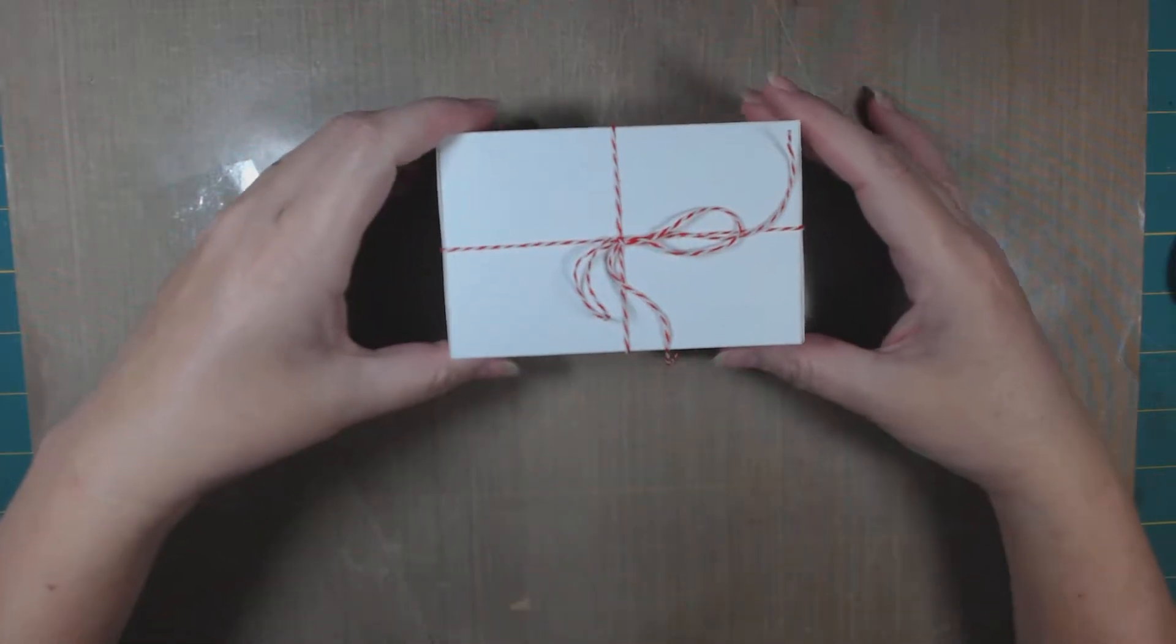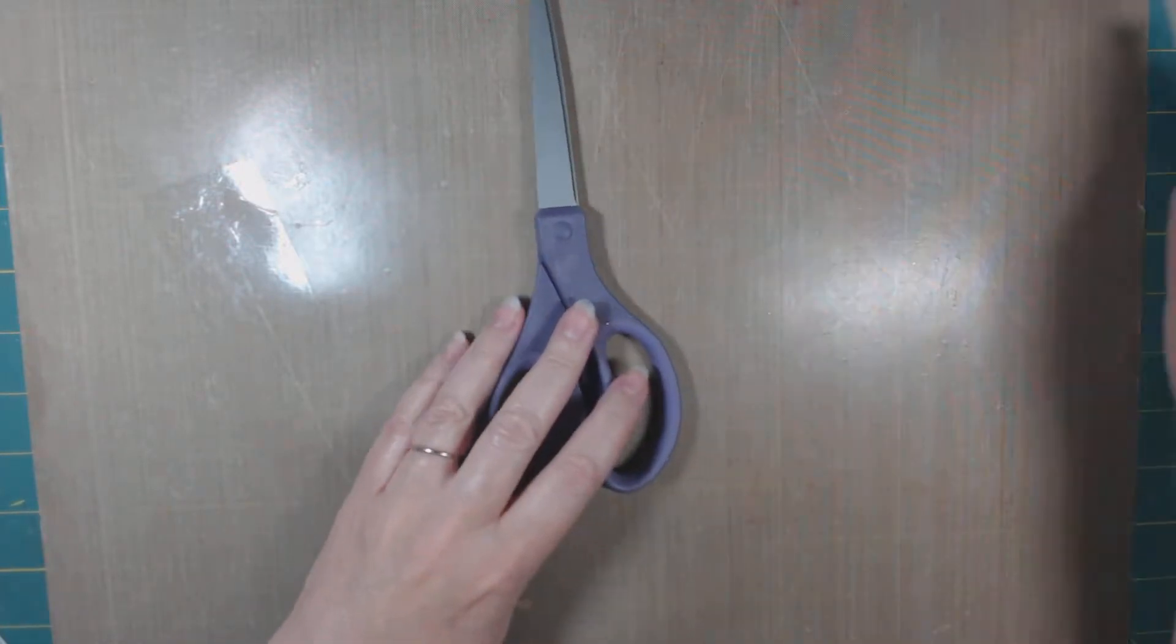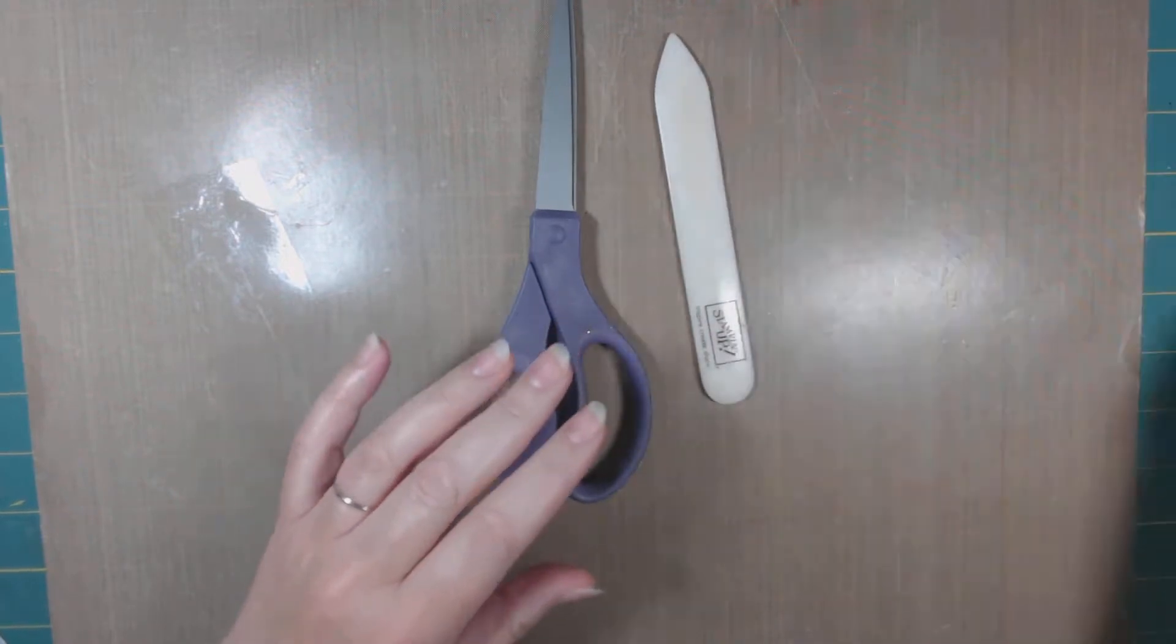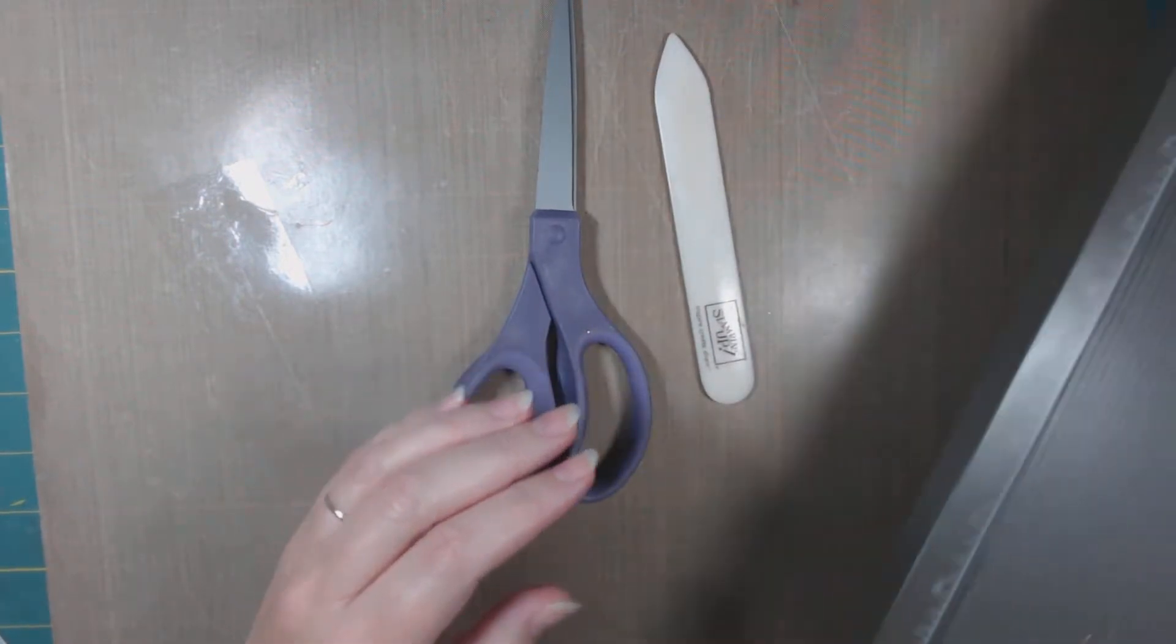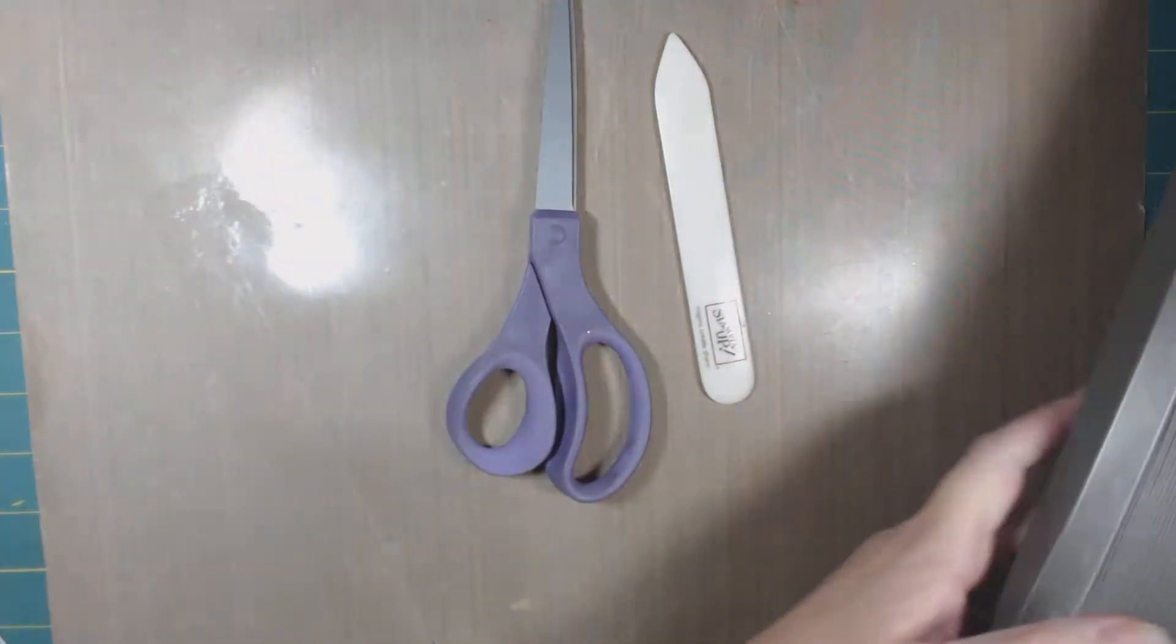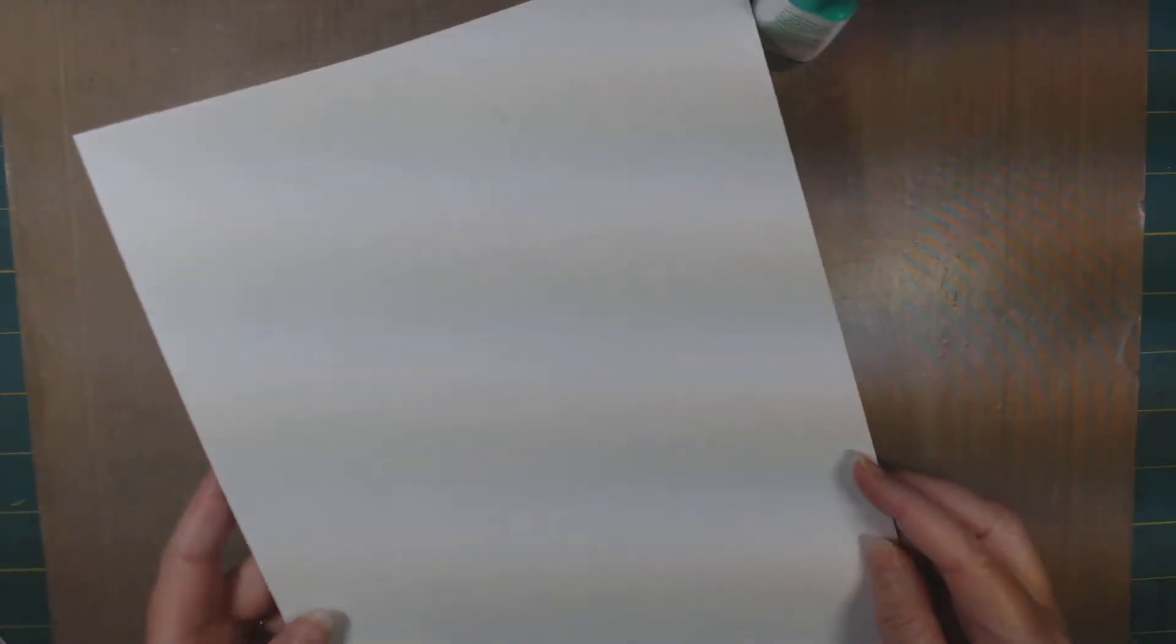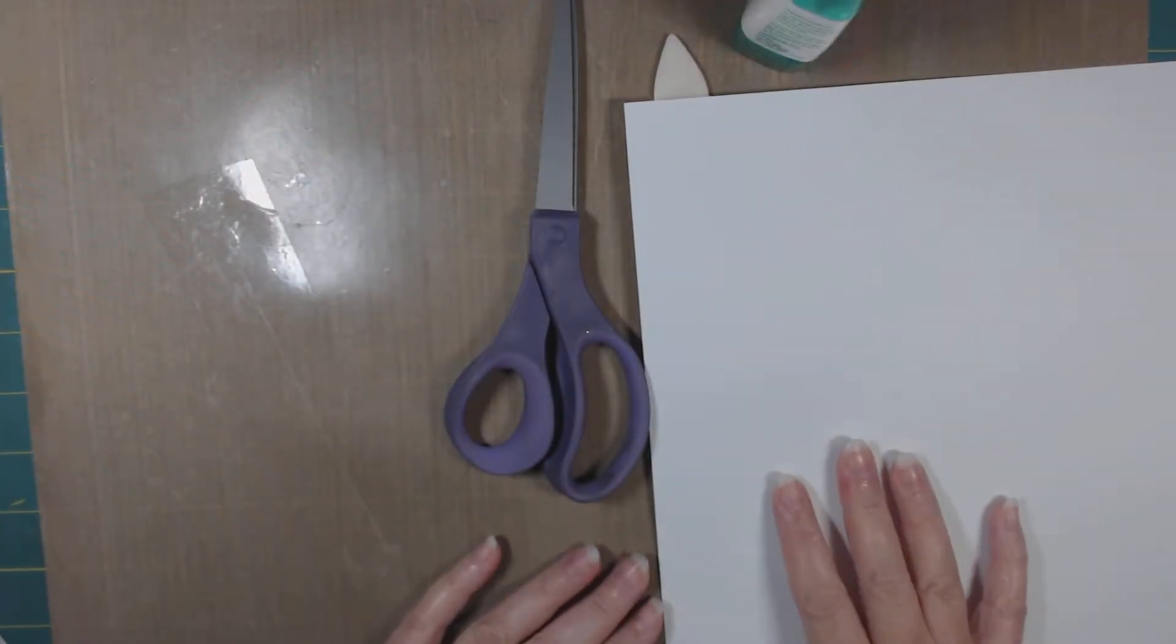If you'd like to make this project along with me, I'm going to list all the supplies that we're going to need. You'll need a pair of scissors, a bone folder, a scoring board tool, some glue, and a piece of whisper white paper measuring nine and one-eighth inches this way and twelve inches this way.